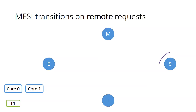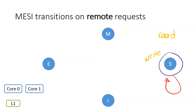The shared state behaves very similarly to the exclusive state. The only difference is that if core 1 is trying to read from the data of this cache line, we do not have a transition and the cache line stays in the shared state. However, if core 1 writes on this data, we naturally have a transition from the shared state to the invalid state for this cache line on core 0.